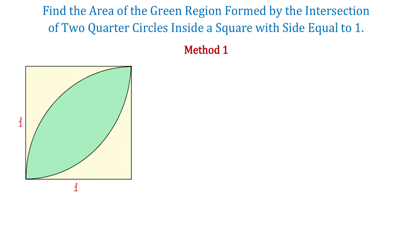In this figure, we have a square with each side equal to one unit, and we have to find the area of the green region that is formed by the intersection of two quarter circles.